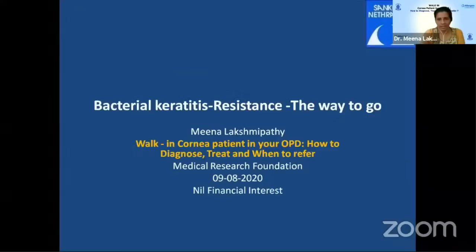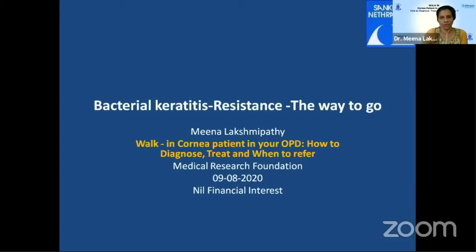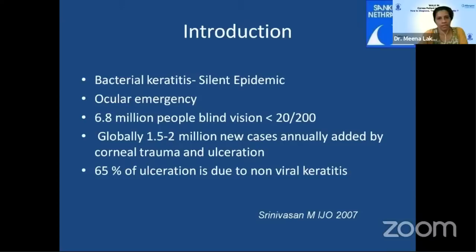Thank you for having me here. I am going to talk about bacterial keratitis. Dr. Srinivasan gave a very good editorial in the 2007 IJO edition introducing the term 'silent epidemic.' It is very important because bacterial keratitis is considered an ocular emergency. At this moment, there are probably 6.8 million people who are unilaterally blind, and every year 1.5 to 2 million people are added to corneal blindness. Corneal blindness is only second to cataract blindness. Of corneal ulceration, 65% are non-viral, meaning the majority are bacterial or fungal keratitis.